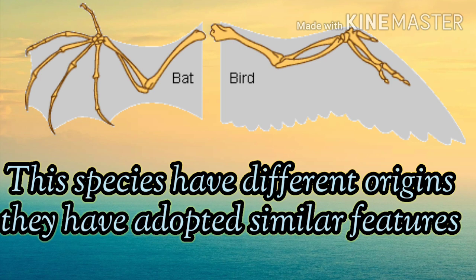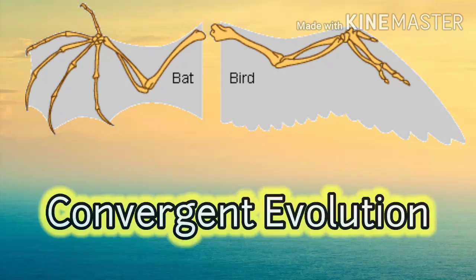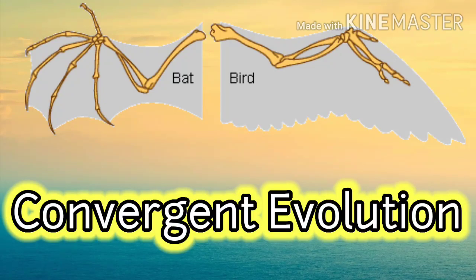These species have different origins, but they have adapted similar types of features. This type of evolution is called convergent evolution.